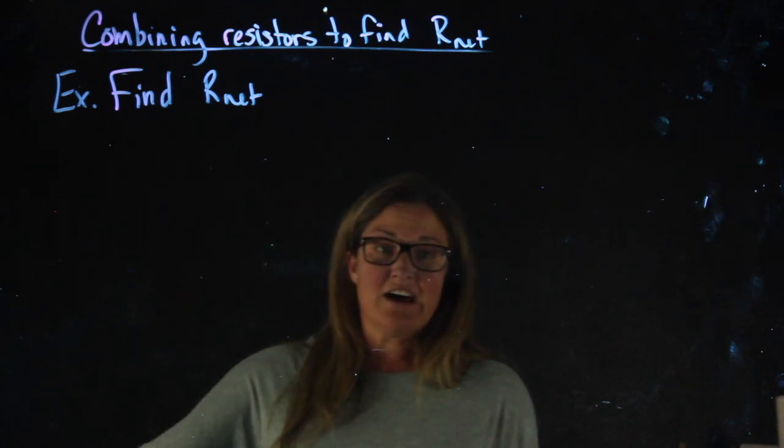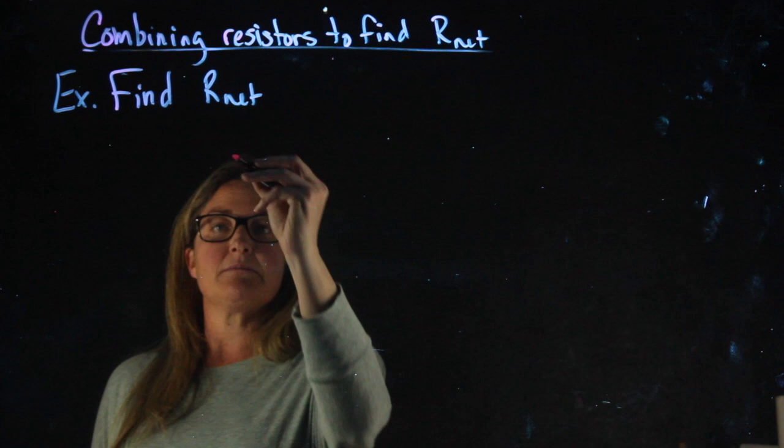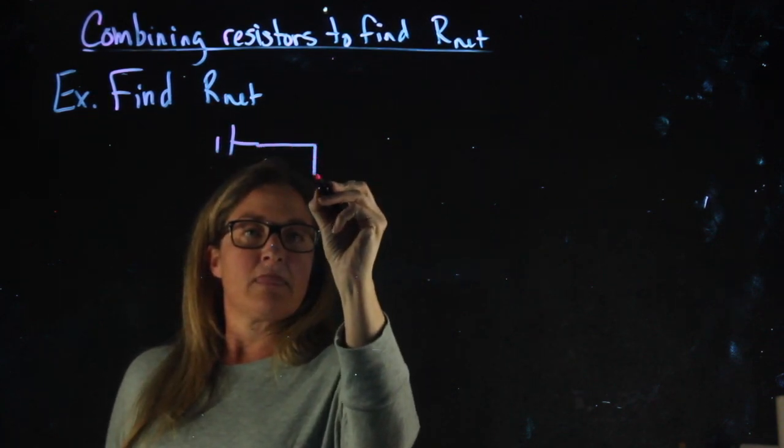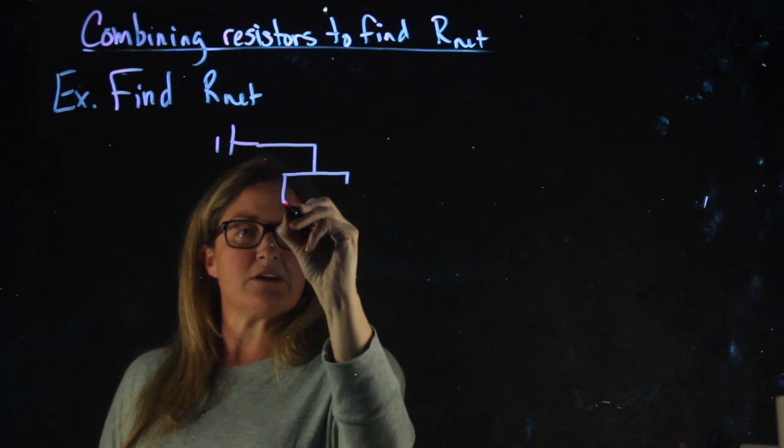This next resistor problem is going to get a little uglier. Alright, let's start with the battery. Then we have a three-way branch.